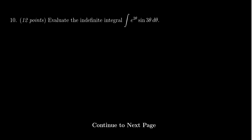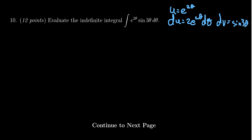For my first iteration, it doesn't really matter which one you pick — just be consistent. I'm going to take u to be e to the two theta, so du equals two e to the two theta d theta. For dv, I'll take sine of three theta d theta, which means v equals negative one third cosine of three theta. I'm also going to refer to the original integral as capital I, because I'll need that later.